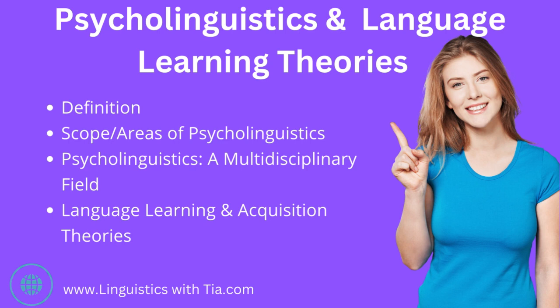The scope and areas of psycholinguistics, psycholinguistics as a multidisciplinary field, and language learning and acquisition theories. This lecture is important for student scholars. The main objectives are introducing learners to the basic concepts and theories of psycholinguistics such as language processing, comprehension, and prediction, as well as the relationship between language and thought. The second objective is exploring different approaches and methods such as nativist behavior and neurological linguistics. You can read the transcript of this lecture as a blog via the link in the description section. So enjoy learning linguistics with Tia, and let's move to the first slide.